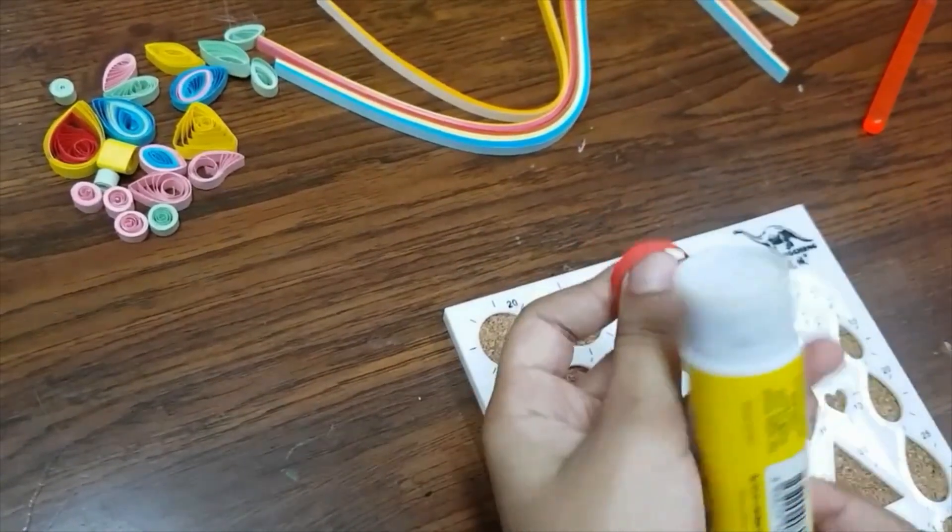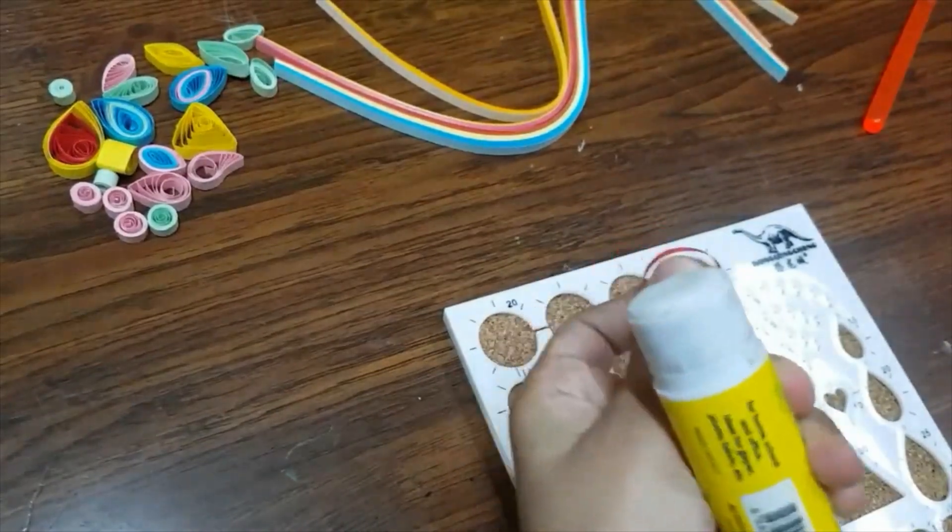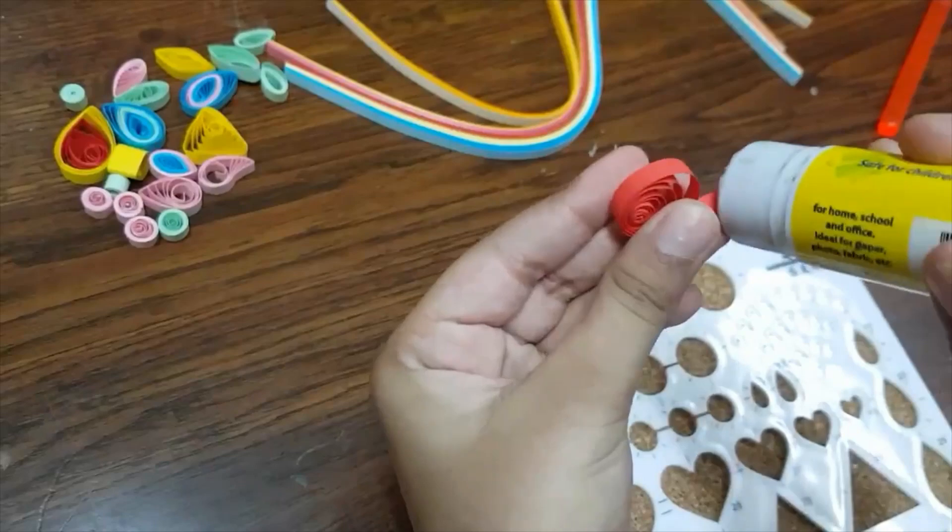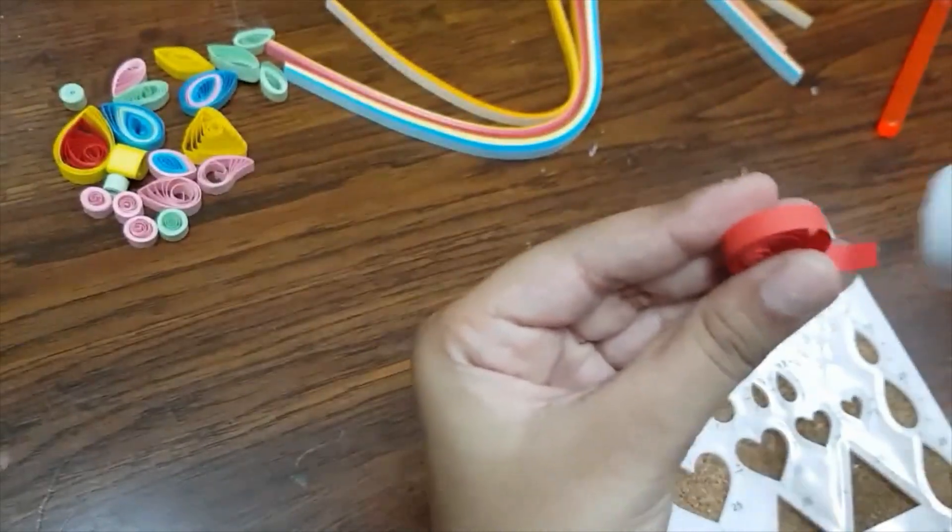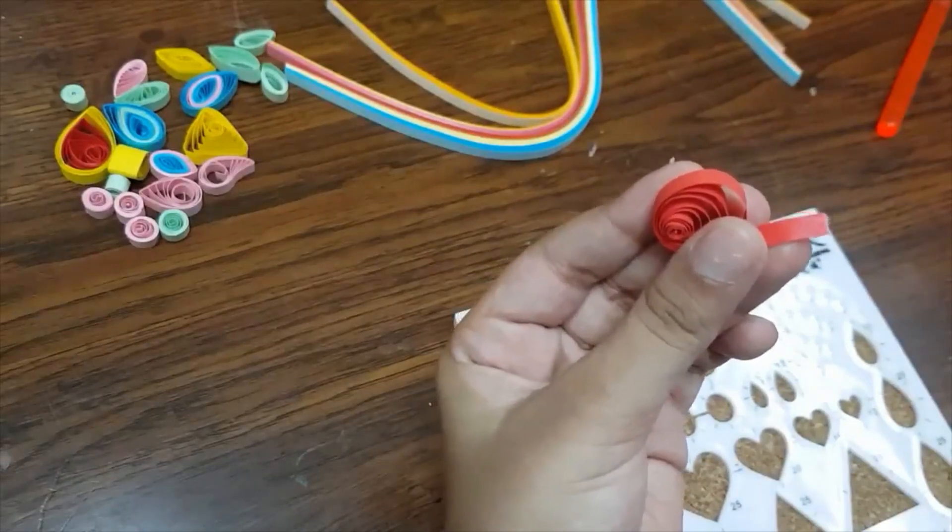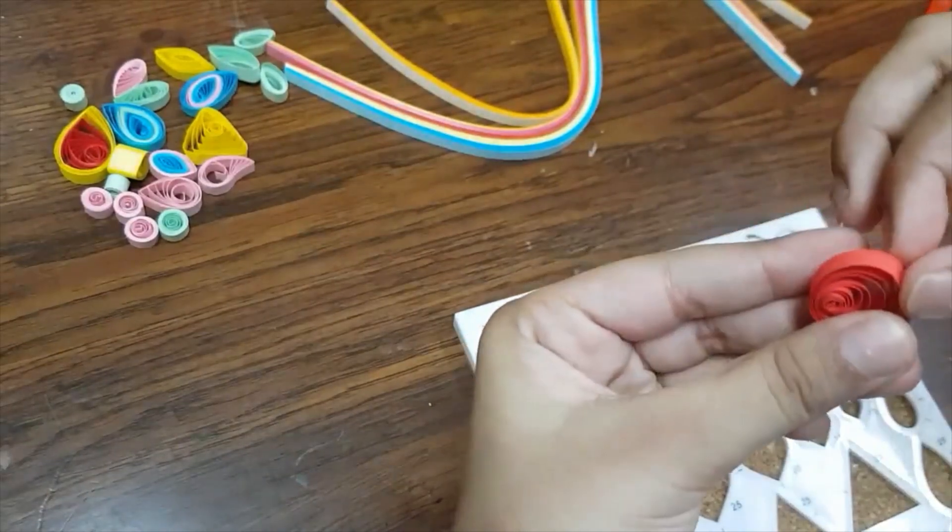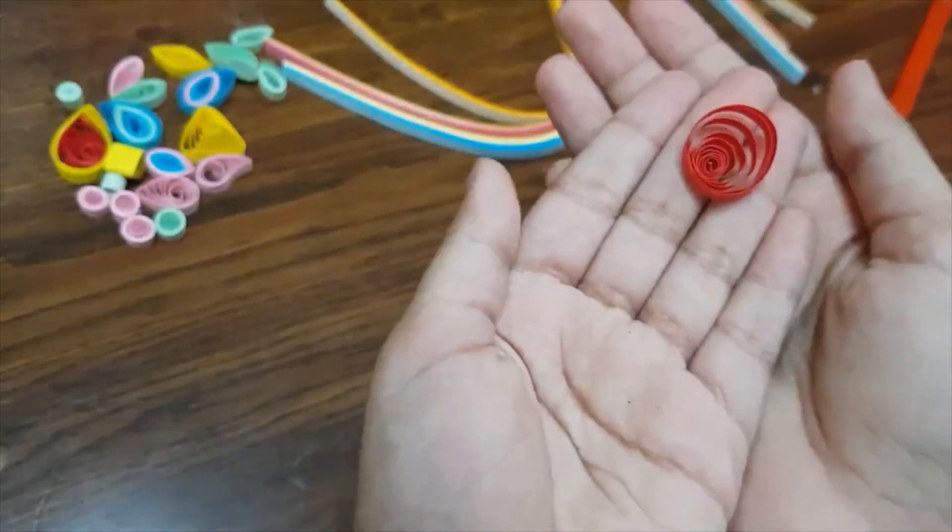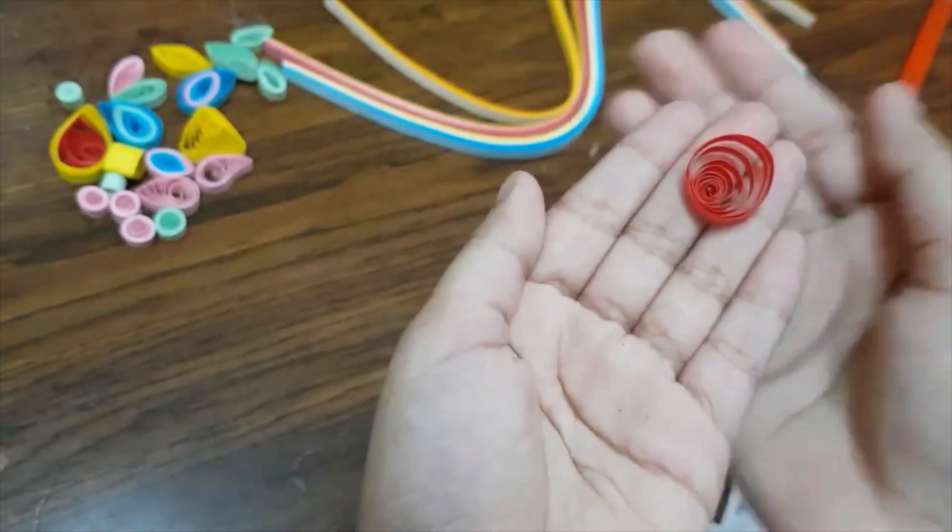There, now we've got that circle shape. Now we got to stick it. I'm going to stick it at the end - just put a little bit of glue over there and stick it. So like that.